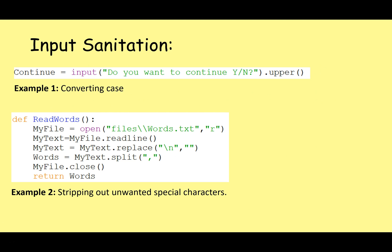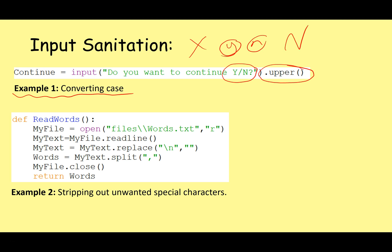Let's look at some simple examples of input sanitization using Python. The first example is just converting case — the user inputs Y or N to answer 'do you want to continue?' Although I'd like uppercase characters, users will sometimes enter lowercase, which could crash the next part of my program. So whatever they've input, I just automatically convert it to uppercase — lowercase y becomes uppercase Y, lowercase n becomes uppercase N — and I don't have to worry about my program crashing later.